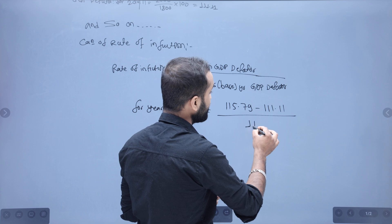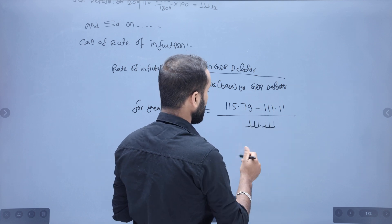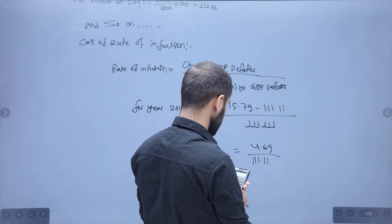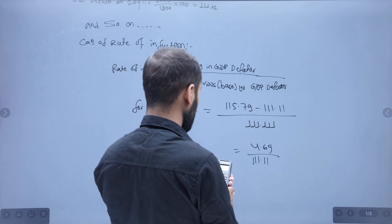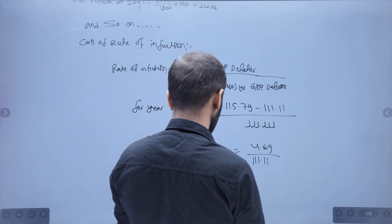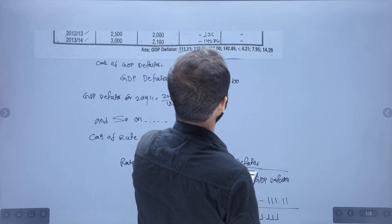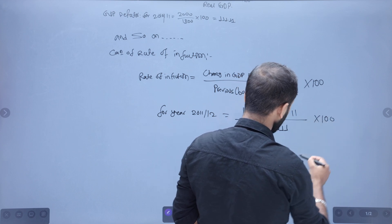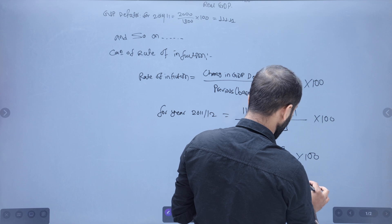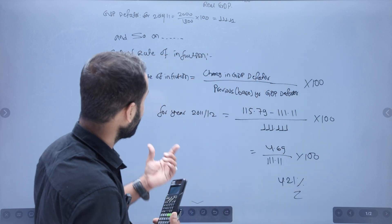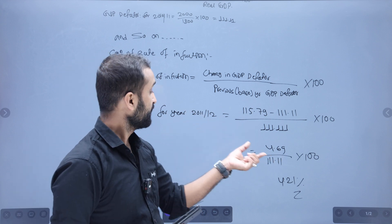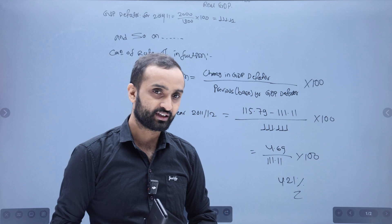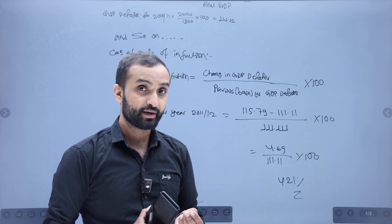It will be 5.5 for the previous year's GDP deflator. We get 4.69 divided by 111.11, into 100. This gives us 4.21 percent. So the inflation rate increased in 2010 to 2011.